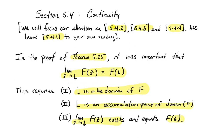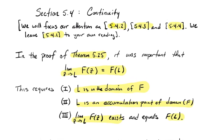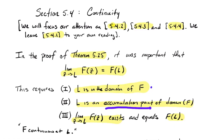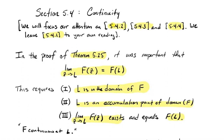We're going to give a name to a function that has these properties at some point in its domain — we're going to call it continuous. These three conditions are what I mean by F being continuous at L: L is in the domain, it's an accumulation point of the domain, and the limit at L exists and equals the function value there.